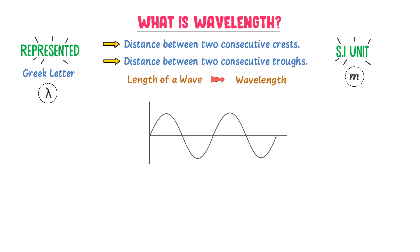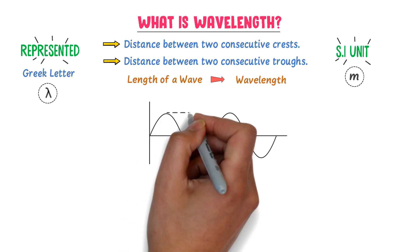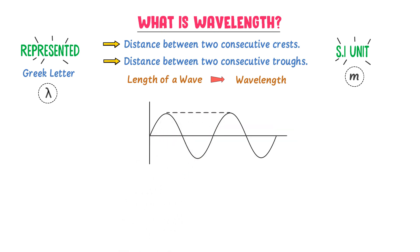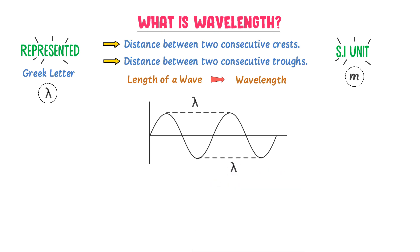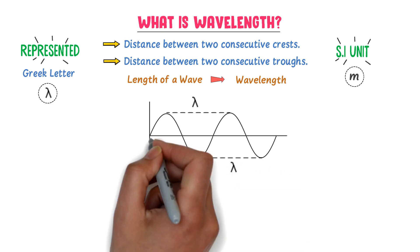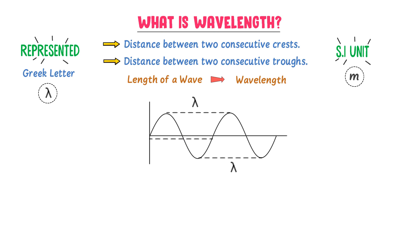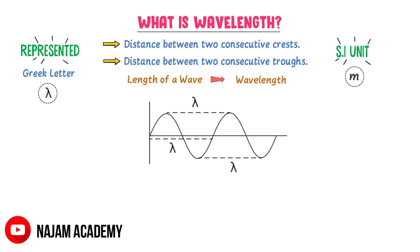For example, consider this wave motion. The distance between this crust and this crust is wavelength lambda. Similarly, the distance between this trough and this trough is wavelength lambda. Also, the distance between this crust and this trough is wavelength lambda. Thus, wavelength lambda is the distance of any wave.